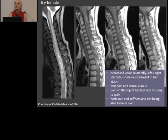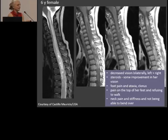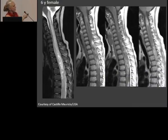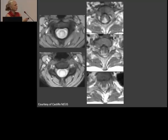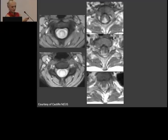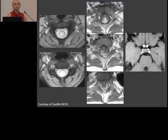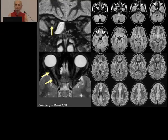This case from Mauricio Castillo in the United States is an even younger child — six years old — with decreased vision bilaterally. Steroids helped a little, but she then came back with foot pain, ataxia, and refused to walk. There is a very long signal intensity change in the cord with patchy enhancement. On axials, it is centrally located in the cord with irregular enhancement. This child also has enhancement of the optic nerves on both sides — a perfect case of neuromyelitis optica.